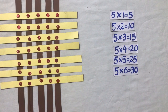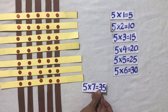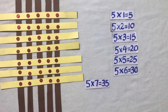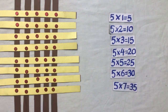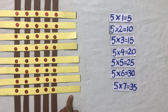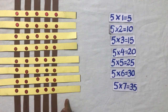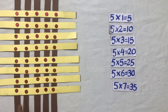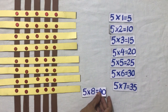That means five sevens are thirty-five. By placing another horizontal strip with five more intersecting points, we get forty intersecting points. It means five eights are forty.